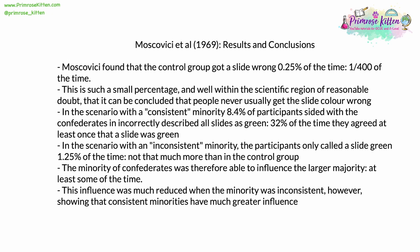Moscovici found that the control group got a slide wrong just 0.25% of the time, suggesting people almost never get the slide colour wrong. However, in the consistent minority condition, 8.4% of participants sided with the confederates and incorrectly described slides as green, and 32% agreed at least once that a slide was green. In the inconsistent minority condition, participants only called a slide green 1.25% of the time — not much more than the control group.